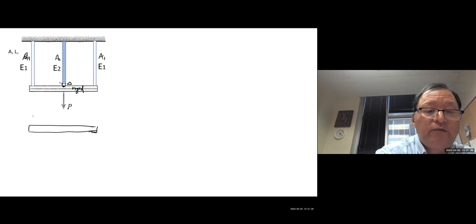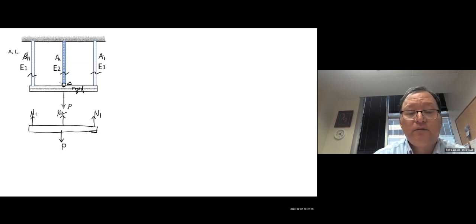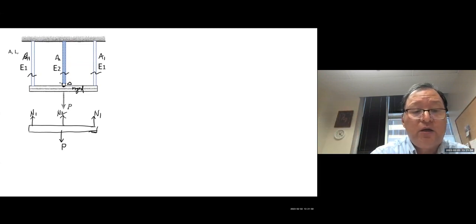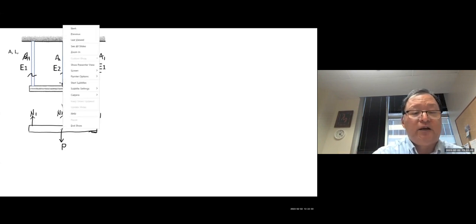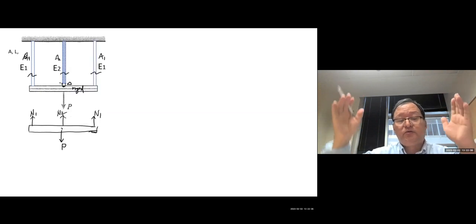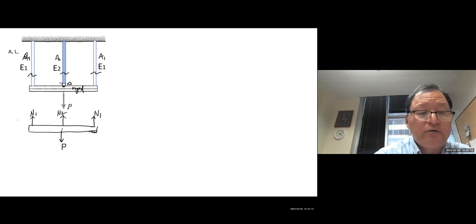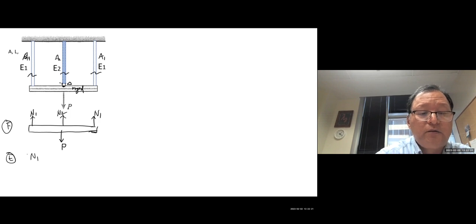This is again an indeterminate system. Drawing the free body diagram of the rigid beam: cut the three bars, giving N1 (outer bars, equal by symmetry) and N2 (middle bar), plus load P. By symmetry the two outer bars carry equal force. The equation of equilibrium: 2·N1 + N2 − P = 0.